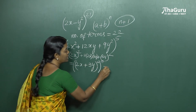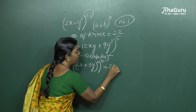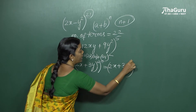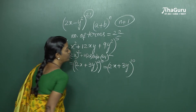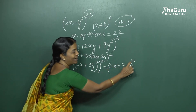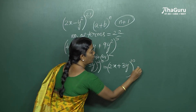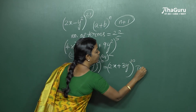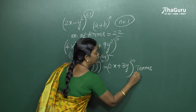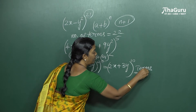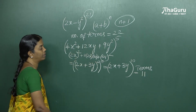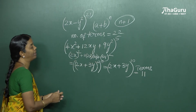So as a binomial expansion, it becomes (2x + 3y) raised to the power 10. The power is 10, so the number of terms in this expansion will be equal to 10 plus 1, or 11.